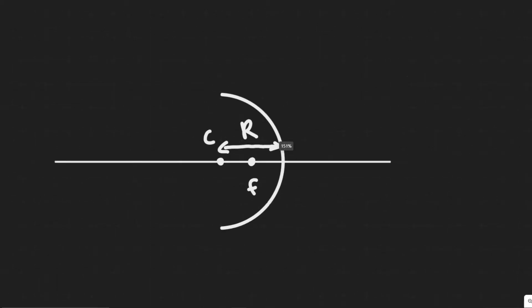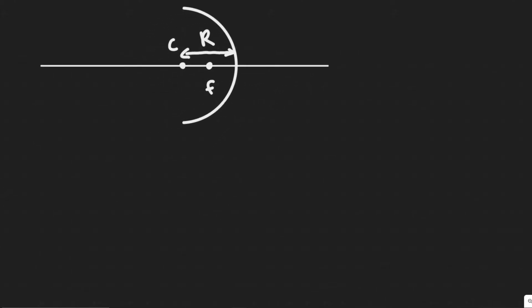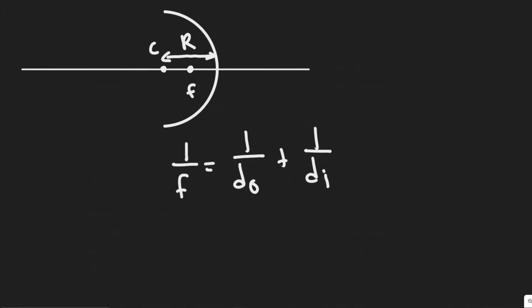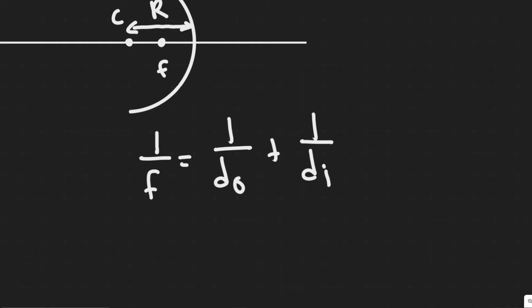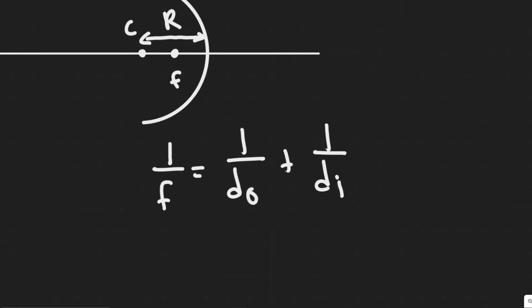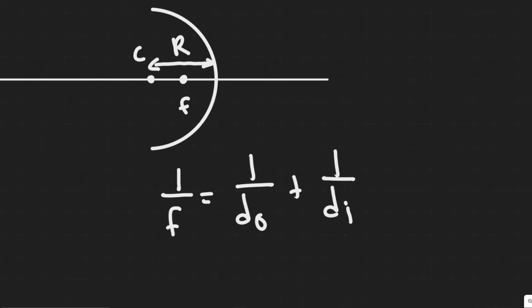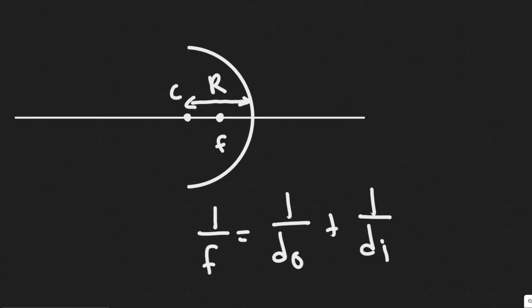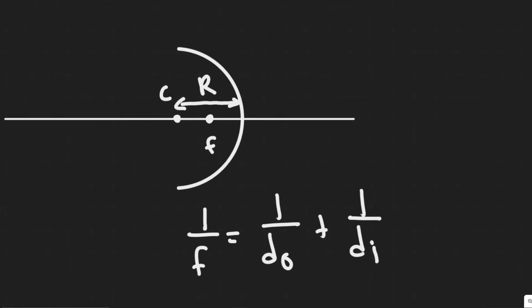We're going to solve this problem using the mirror equation, which tells us 1 over f, or the focal length, is equal to 1 over the object distance plus 1 over the image distance. What we're trying to solve for is how far the object needs to be placed, the object distance d₀. So d₀ is the distance between our object and the mirror. We're going to be solving for that.